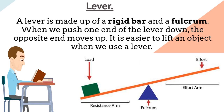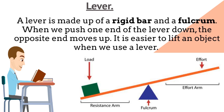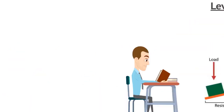Lever. A lever is made up of a rigid bar and a fulcrum. When we push one end of the lever down, the opposite end moves up. It is easier to lift an object when we use a lever.